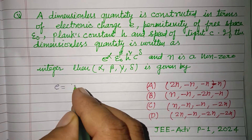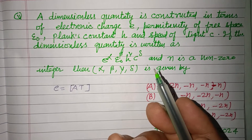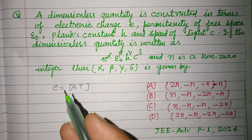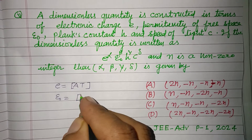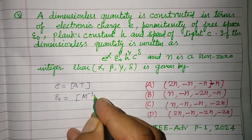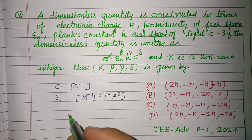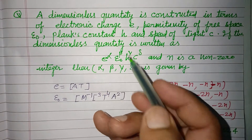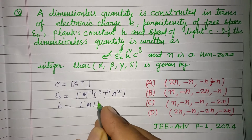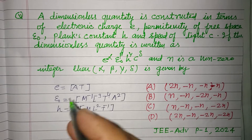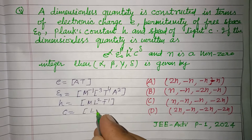The dimension of E is AT. Using this parameter, permittivity of free space Epsilon naught has dimension M minus 1, L minus 3, T4, A2. Planck constant H has dimension M L squared, T minus 1. And speed of light C, which is velocity, has dimension L T minus 1.